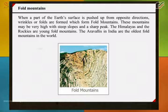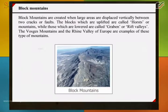Block mountains are created when large areas are displaced vertically between two cracks or folds. The blocks which are uplifted are called Horst or Mountains, while those which are lowered are called Graben or Rift Valleys. The Vosges Mountains and the Rhine Valley of Europe are examples of these types of mountains.